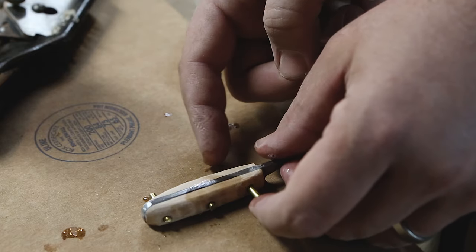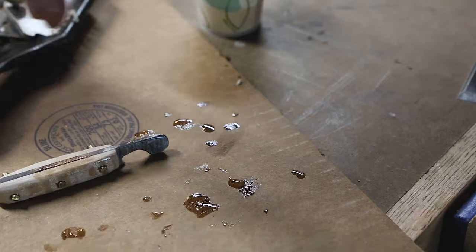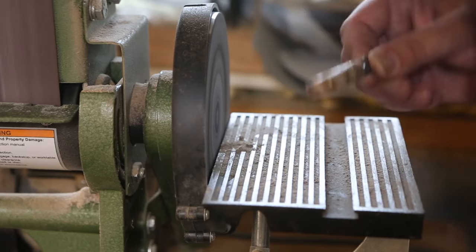I had some brass rod in the shop, so I cut some small pieces and then epoxied those in. I flushed the pins up with the belt sander and then did some more fine shaping with the random orbital sander.